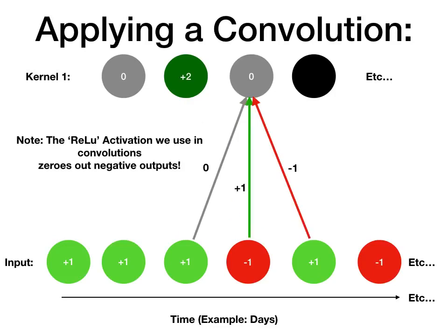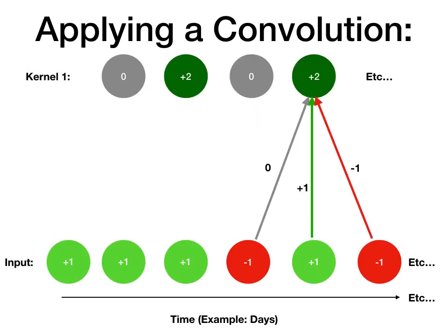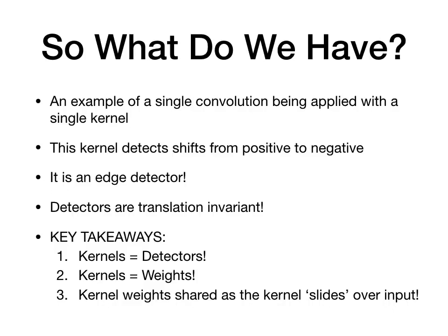We'll do this a few more times. You'll notice that in two instances of our input we've switched from positive to negative, and this convolution operation — this sliding kernel approach — has detected both of these transitions. This is an example of a single 1D convolution being applied with a single kernel. What this kernel does is detect shifts from positive to negative, so it's essentially an edge detector. This is really cool because we have an equivalency here between kernels and detectors — a kernel is a detector.